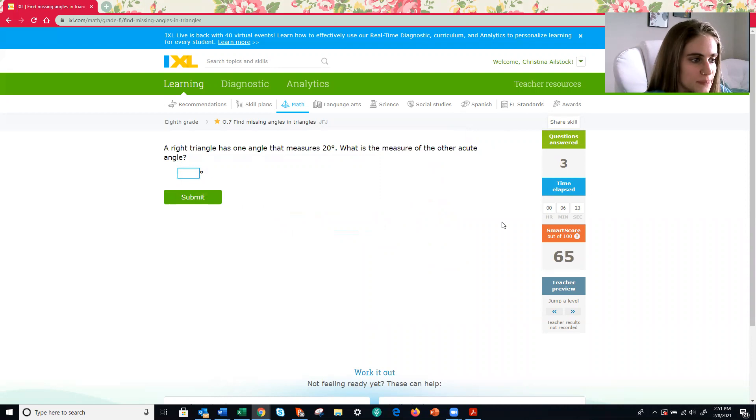A right angle has one angle that measures 20 degrees. What is the measure of the other acute angle? Oh, look at that. What does it say at the very beginning? It's a right triangle. If it's a right triangle, what does that mean one of the angles is? 90. So they did give us two angle measurements. They just gave us one angle measurement using words. So make sure you don't go so fast to these that you're like, oh no, they didn't give me what I need. Yes, they did. They were just trying to see if you were reading.